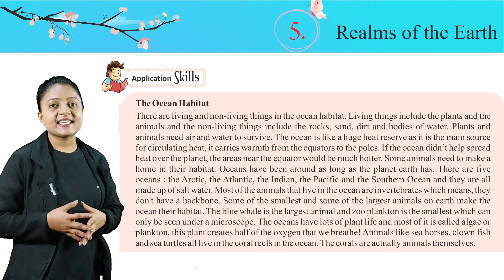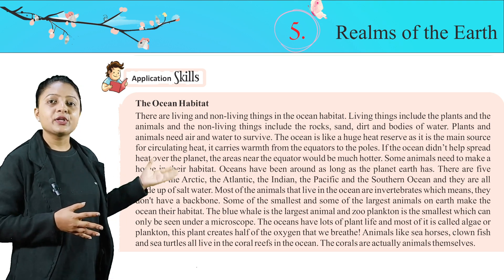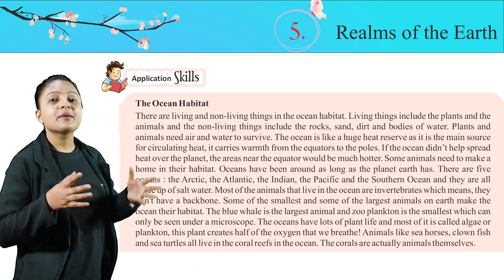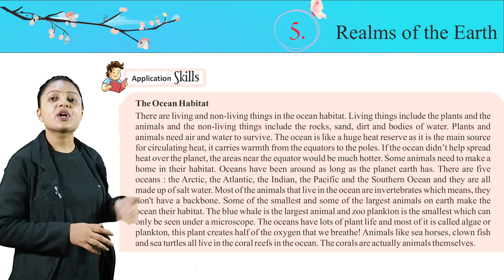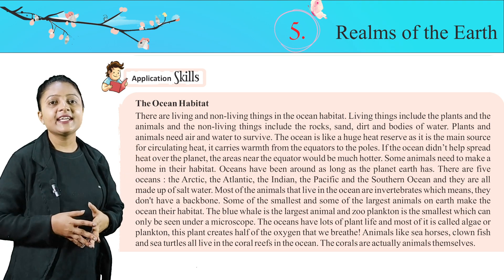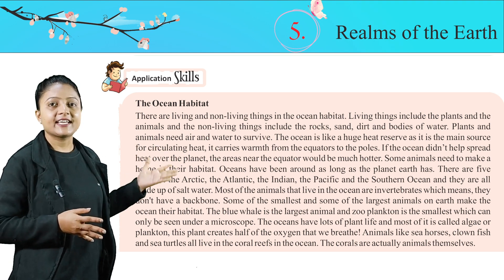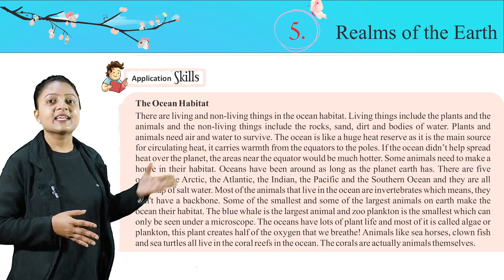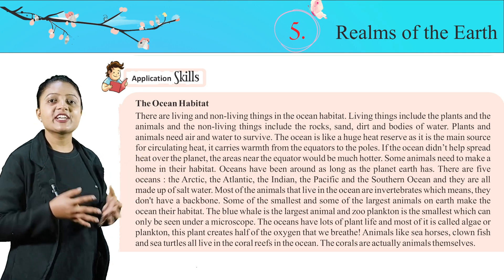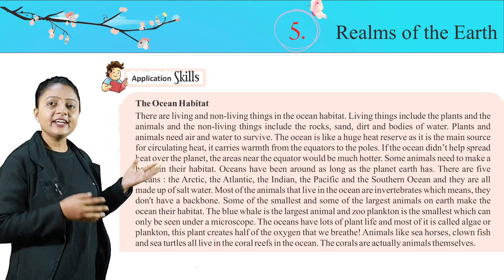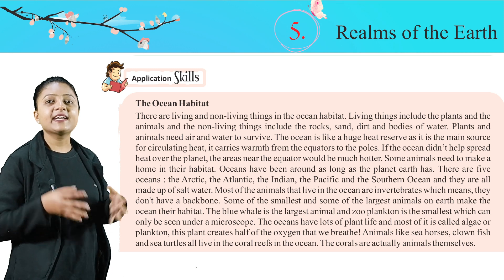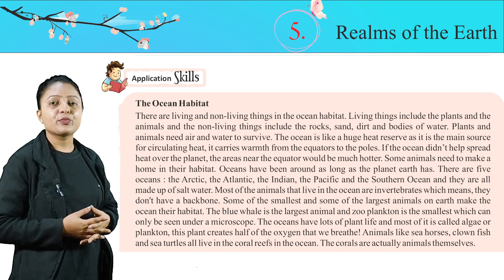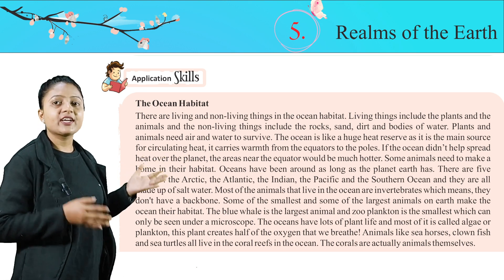The ocean is like a huge heat reserve as it is the main source for circulating heat. It carries warmth from the equator to the poles. If the ocean didn't help spread heat over the planet, the areas near the equator would be much hotter.